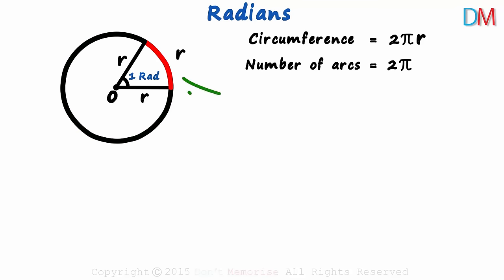How would it look? This is 1 arc, 2, 3, 4, 5, 6 and a little part left for 0.28 arc or 28% of an arc. So we need 2π arcs to cover the entire circumference.